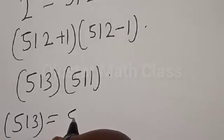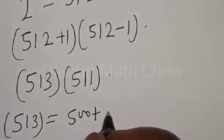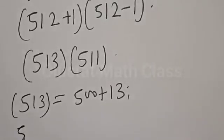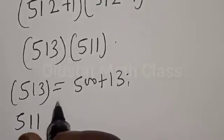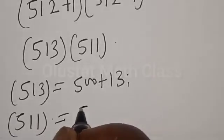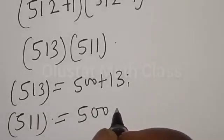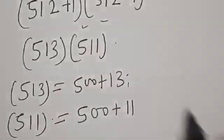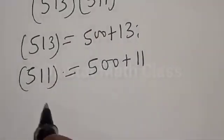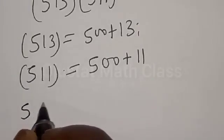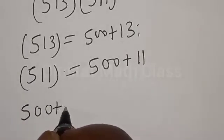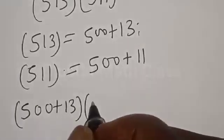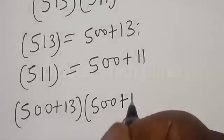So 511 is simply 500 plus 11. Now let's return back to this. We have (500 plus 13) multiplied by (500 plus 11).